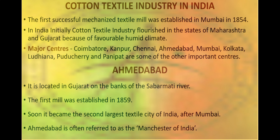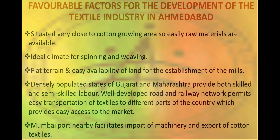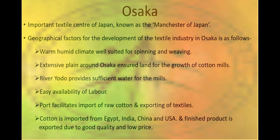Ahmedabad's first mill was established in 1859 and it is called the Manchester of India. In Ahmedabad, textile industries are mainly located due to the location of cotton growing areas, ideal climate, flat terrain, densely populated area, and Mumbai port which facilitates import of machinery and export of cotton textile.